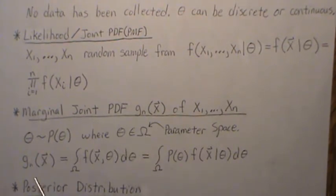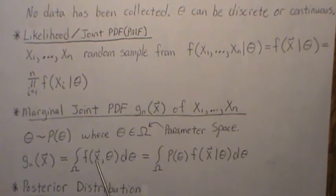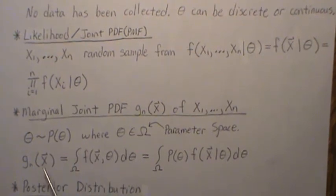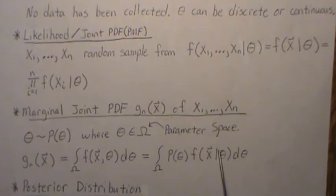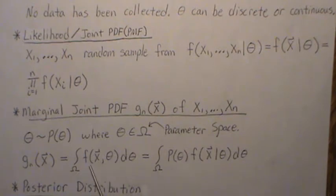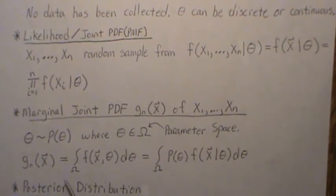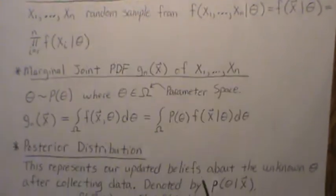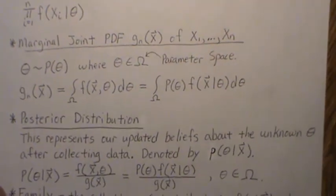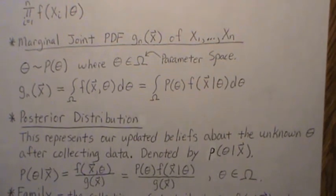To get a marginal distribution of X, we take the joint density between our data and the parameter theta and integrate out theta over all possibilities. That leaves the joint density for just X. Using probability theory, you can replace the joint with the conditional distribution F of X given theta times the prior of theta. Since we know both of these, we can calculate the marginal joint PDF for our data.